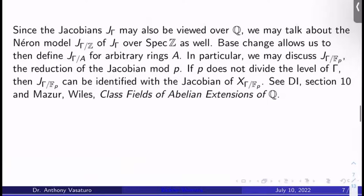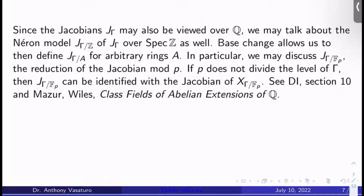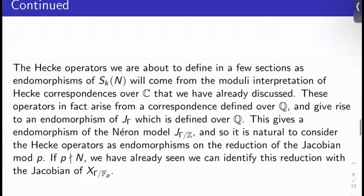Now, if p doesn't divide the level M of Γ, this reduction of the Jacobian mod p can actually be identified with the Jacobian of X_Γ over 𝔽_p. What this is saying — and it's non-trivial — is that if p doesn't divide the level, you can either take the reduction of your modular curve mod p and then take its Jacobian, or take the reduction of its Jacobian mod p, and it turns out they're the same. References: Diamond-Shurman section 10, Mazur-Wiles' class fields of abelian extensions of ℚ. Now, thinking of Hecke correspondences as Hecke operators — endomorphisms on weight k cusp forms of level N — will come from the moduli interpretation over ℂ already discussed. It turns out these operators arise from a correspondence defined over ℚ, not just ℂ.